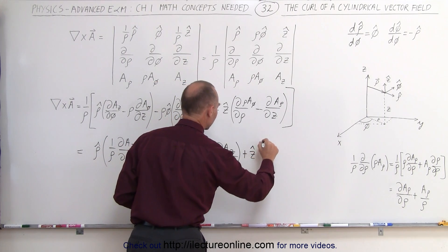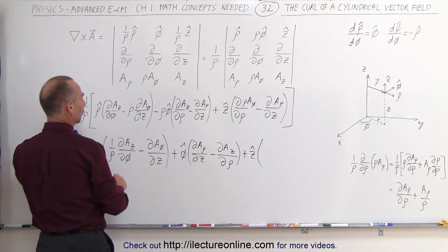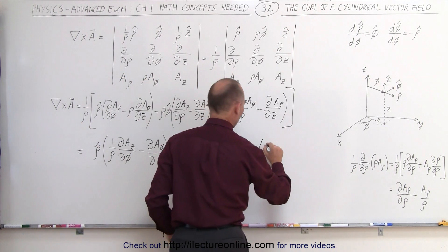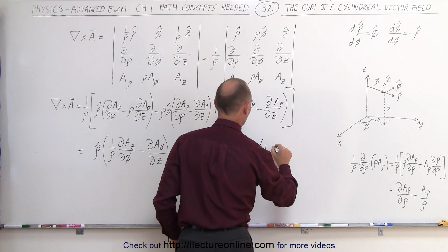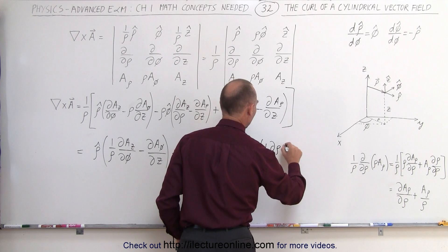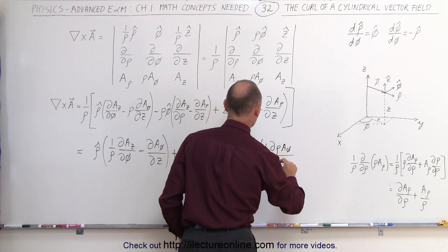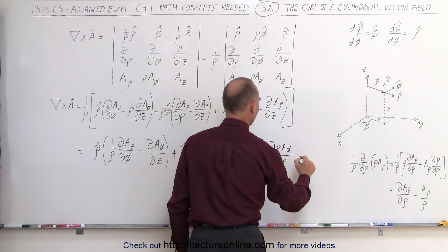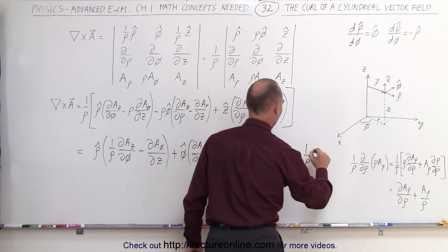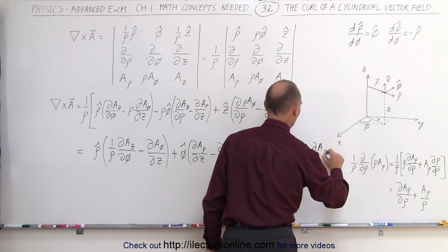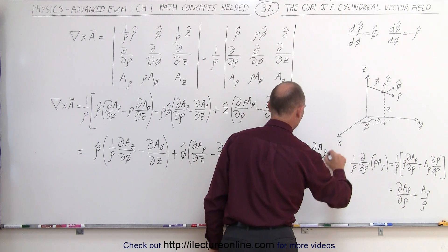And then finally, plus the z unit vector times, so we have 1 over row times this will be written as 1 over row, times the partial of row times a sub phi, divided by the partial with respect to row, minus 1 over row times the partial of a sub row with respect to z.